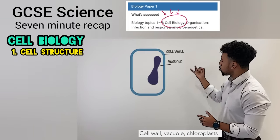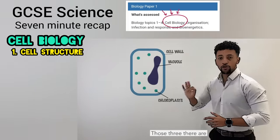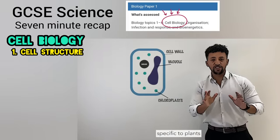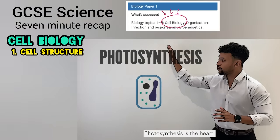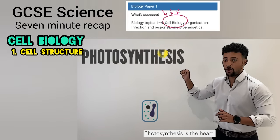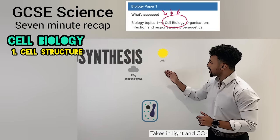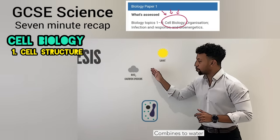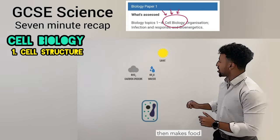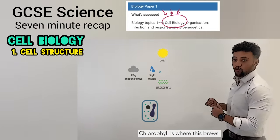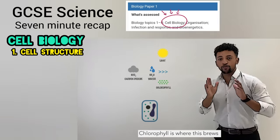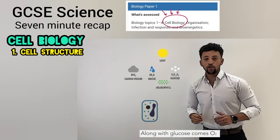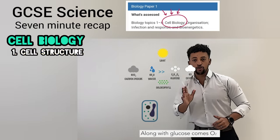Animals done? Next thing is hard — cell wall, vacuole, chloroplast. Those three there are specific to plants. Photosynthesis is the heart — takes in light and CO2, combines still water then makes food. Chlorophyll is where this happens, along with glucose comes O2.